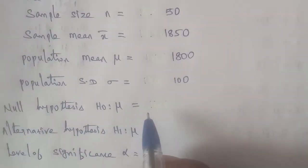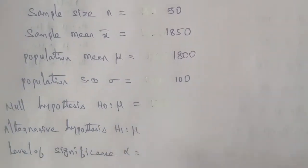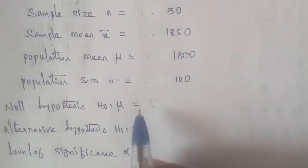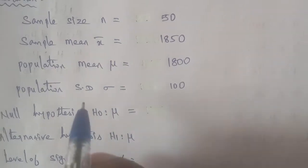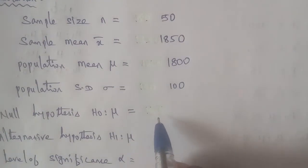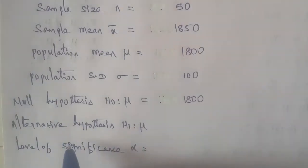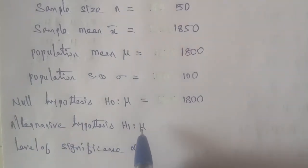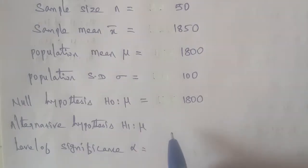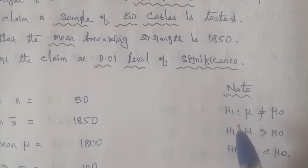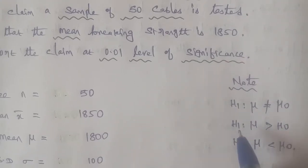This is the hypothesis. Null hypothesis and alternative hypothesis. Null hypothesis H0: mu is equal to 1800. Alternative hypothesis H1: since the claim is an increase, the symbol is mu greater than mu-naught, which is 1800.